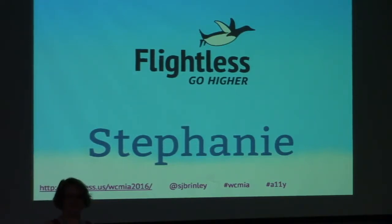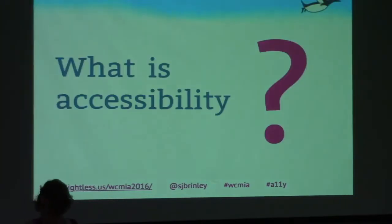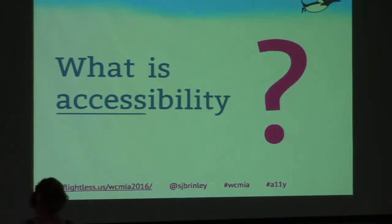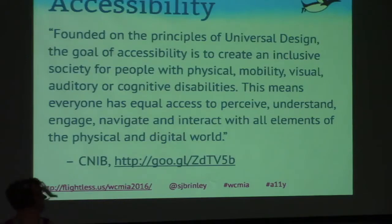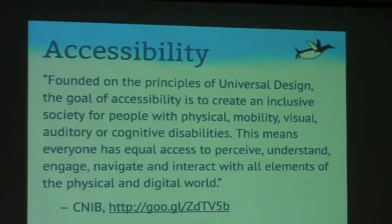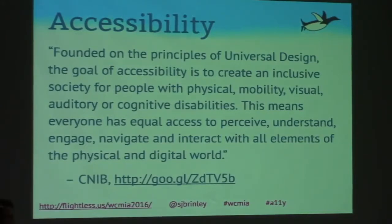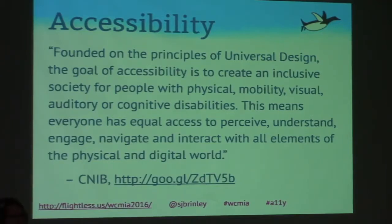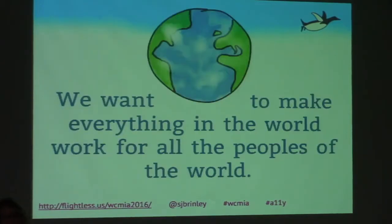So the first thing: what is accessibility? It says it right in the name — access. There's a definition from CNIB, the Canadian National Institute for the Blind. Founded on the principles of Universal Design, the goal of accessibility is to create an inclusive society for people with physical, mobility, visual, auditory, or cognitive disabilities. This means everyone has equal access to perceive, understand, engage, navigate, and interact with all elements of the physical and digital world.